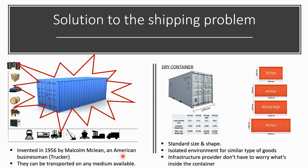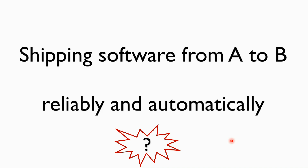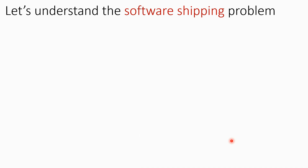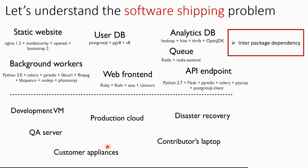We have the same problem with software — we want to ship software from point A to point B reliably and automatically. As part of software, you can have a static website, a user database, an API endpoint, a front-end web UI, or background workers. These software components may need to run on any of these machines — a development VM, production cloud, QA server, or customer appliances.